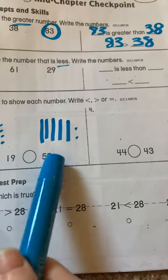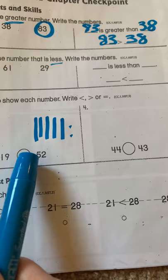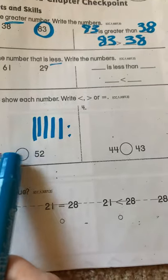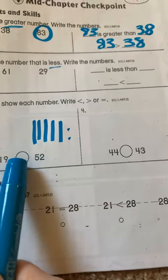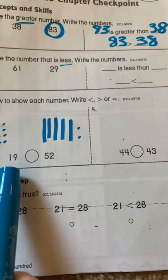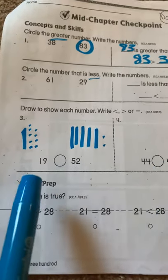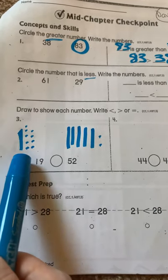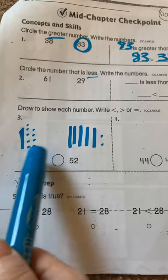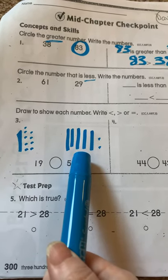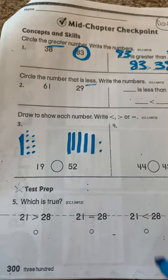Well, let's look. Which one is, let's see. Is 19 less than 52? Is 19 greater than 52? Or is 19 equal to 52? Let's think. Let's look. Do we have less ten sticks here than we do here? Yeah, we do. We have less.